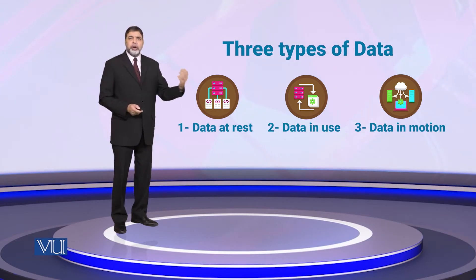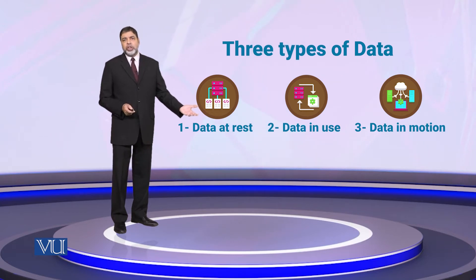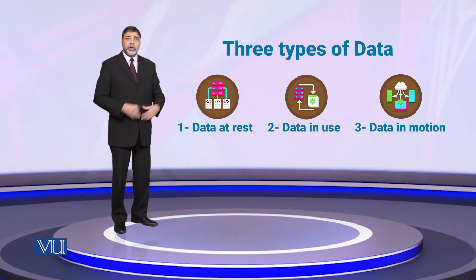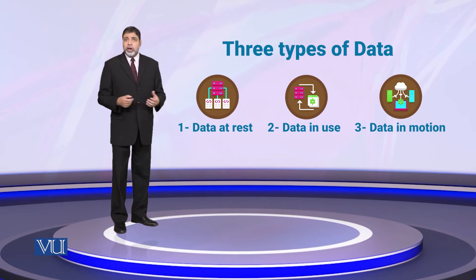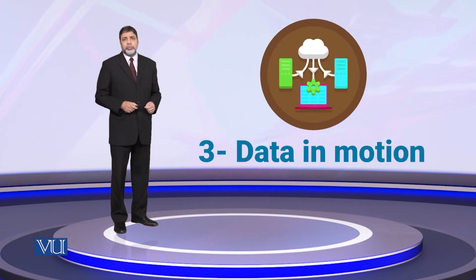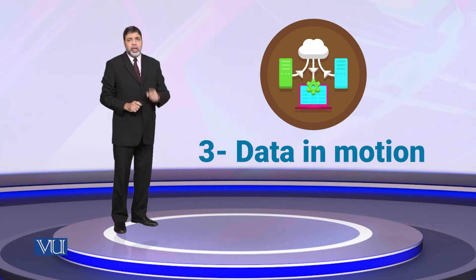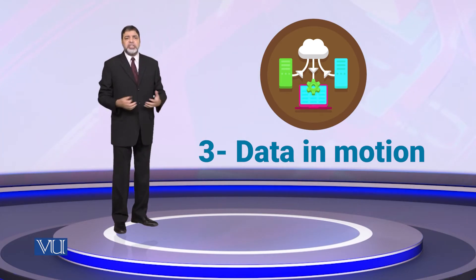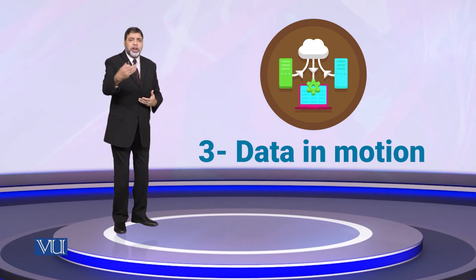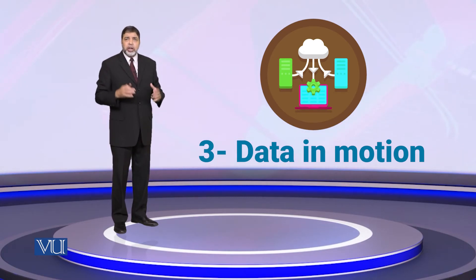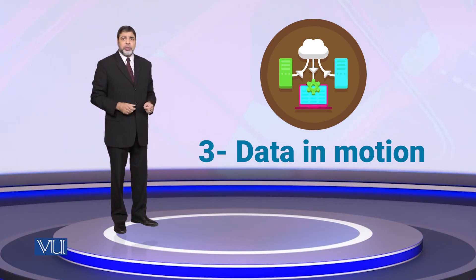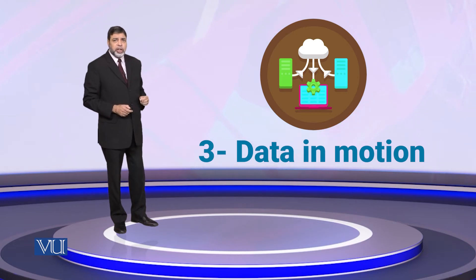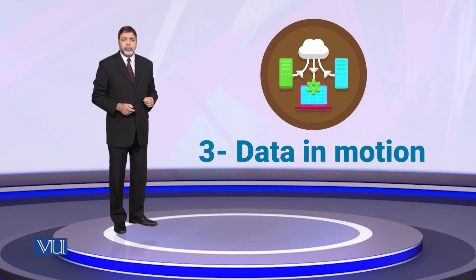Security میں آپ کو ان تینوں چیزوں کو الگ الگ طریقے سے خیال رکھنا پڑتا ہے۔ Data at rest کے لیے security measures کچھ اور ہوں گے، data in use کے لیے کچھ اور، اور data in motion کے لیے totally different mechanism ہوگا۔ Data in motion کا communication سے تعلق ہے — how do you communicate between layers and tiers — یہ ایک بہت important consideration ہے۔